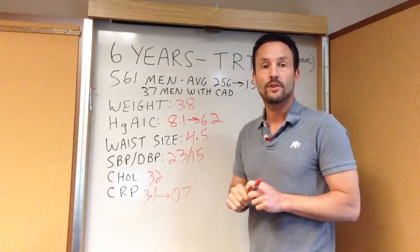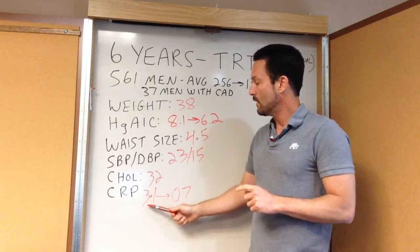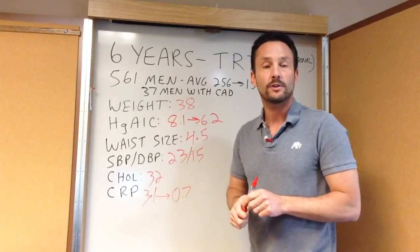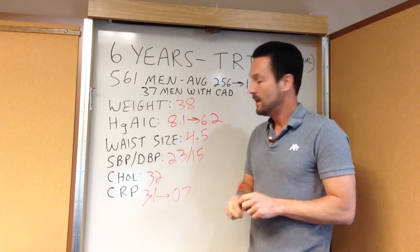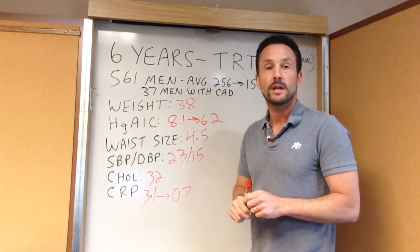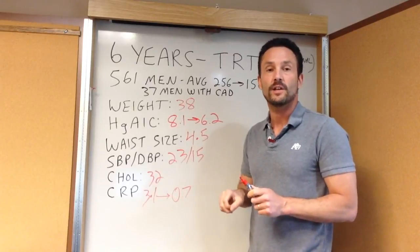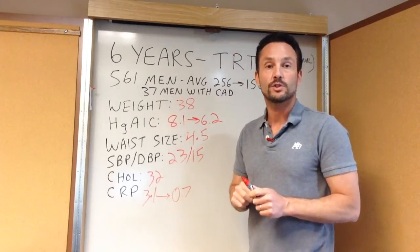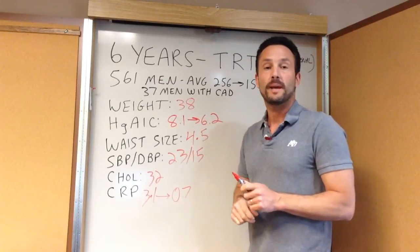So these men were 3 times more likely to have heart attack or stroke based on their CRP. At the end of the study, the average CRP was 0.7, which puts them in the less than half average risk as a marker of inflammation.